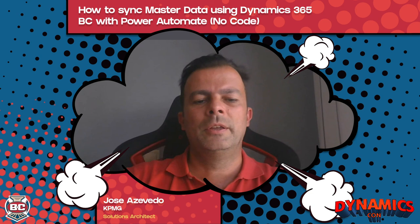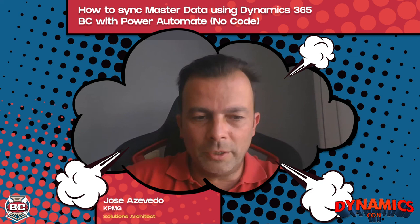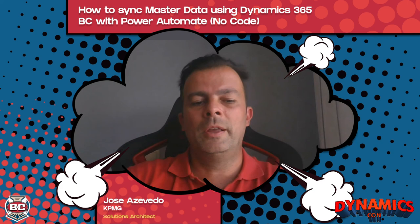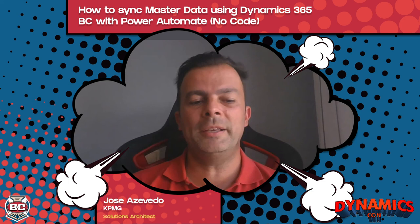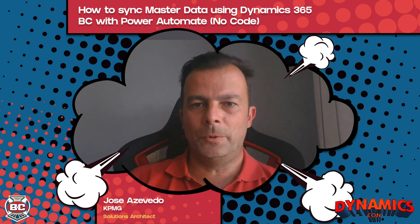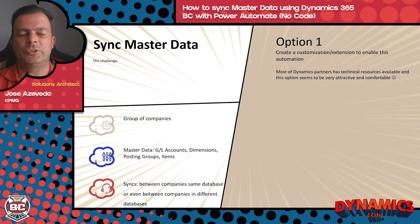The common requirement is: is there any chance that I create this master data in one company and have an automation that flows this data to the rest of the companies? Sometimes we have this flow inside the same database if all the fiscal companies are in the same country and localization. But in some cases, we are talking about multinationals where some companies are based in one country and others in other countries, and with Business Central we need a different database — but the requirements remain the same.